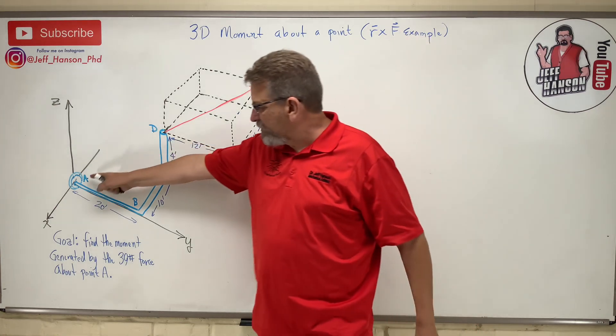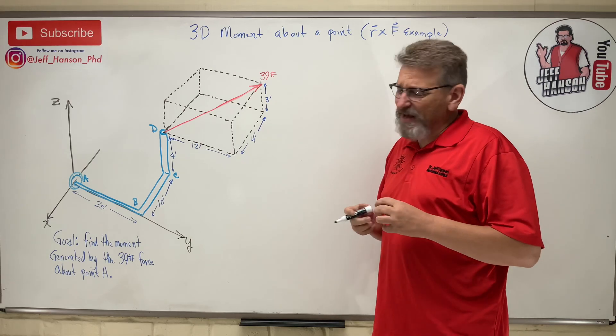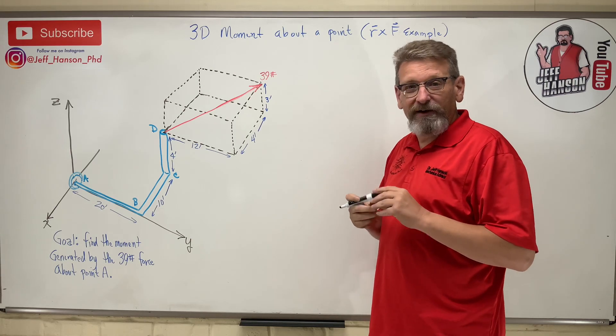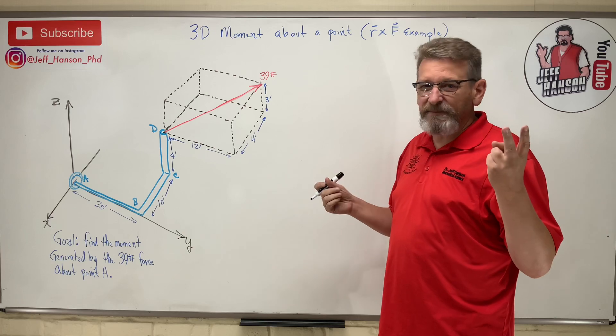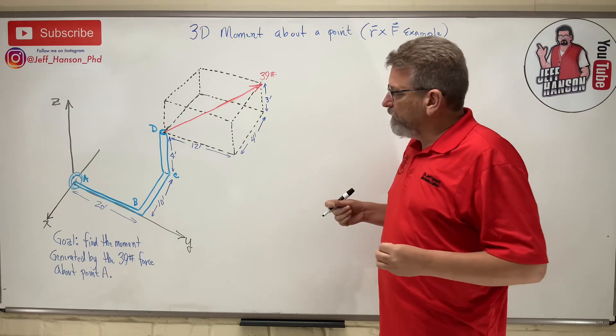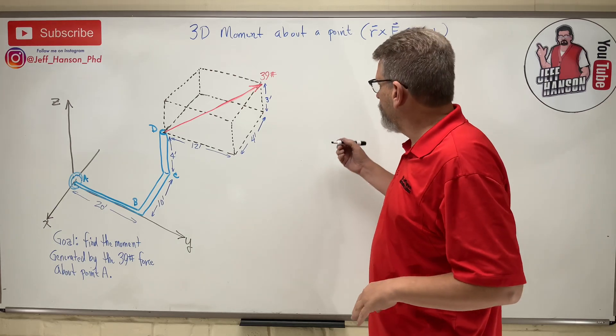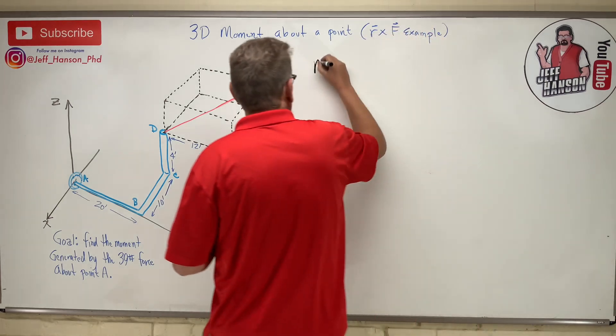Find the moment generated by the 39 pound force about point A. Point A is over here at the wall. Right away, 3D, I'm thinking r cross F. In 2D I might think just force times distance, but 3D, at our skill level, I'm thinking r cross F is the way to go.